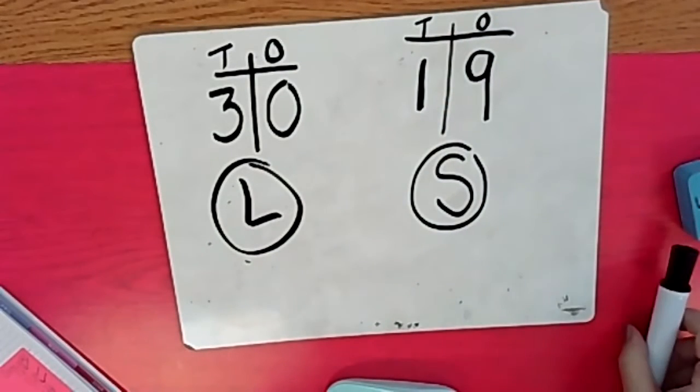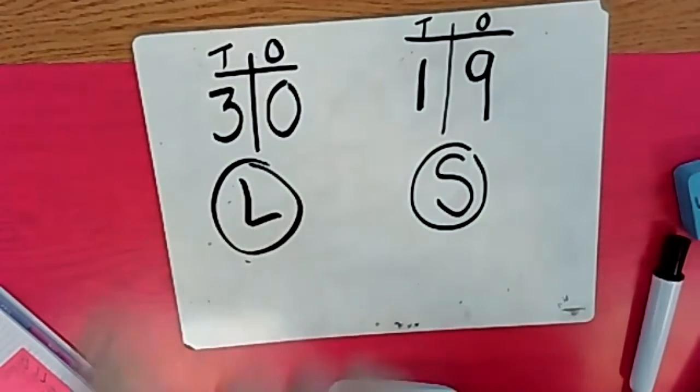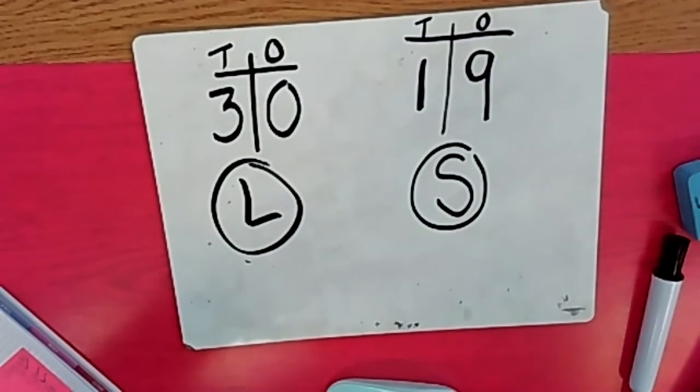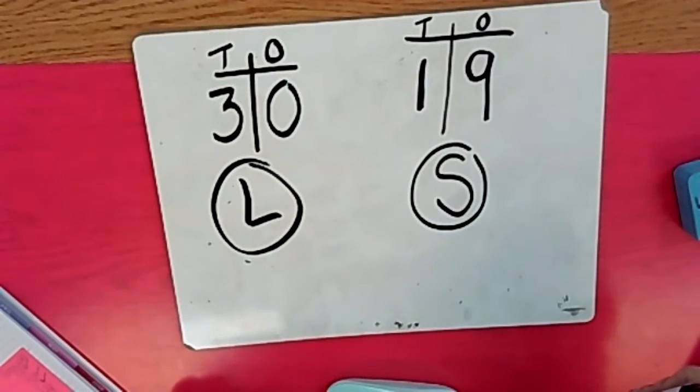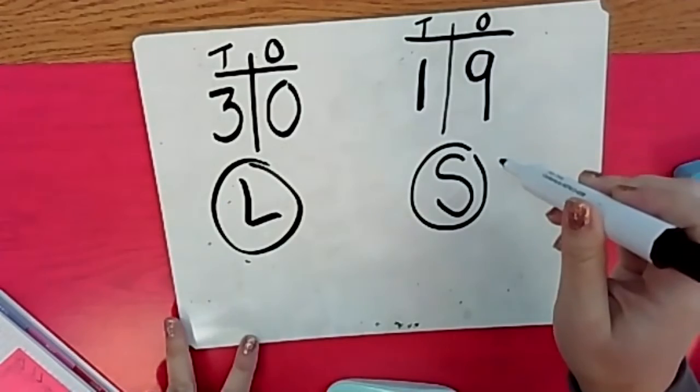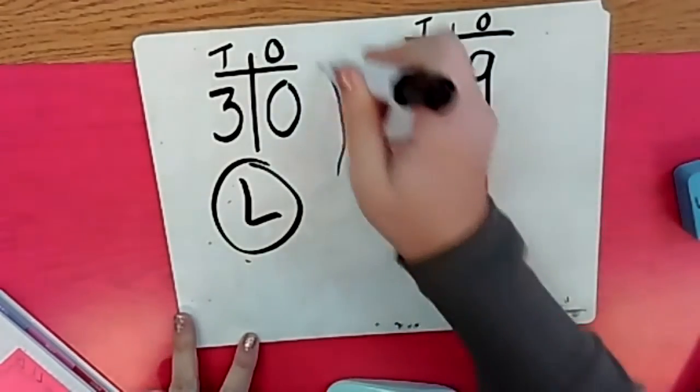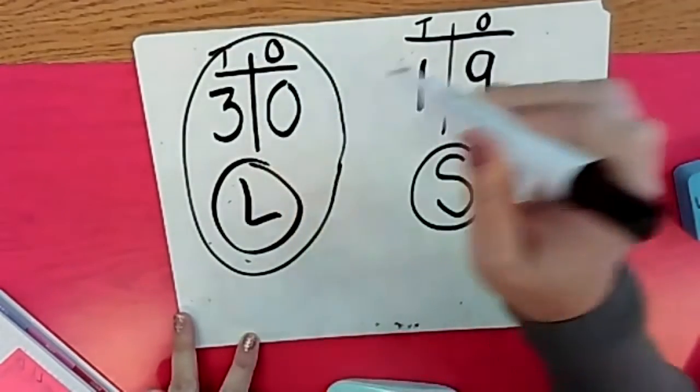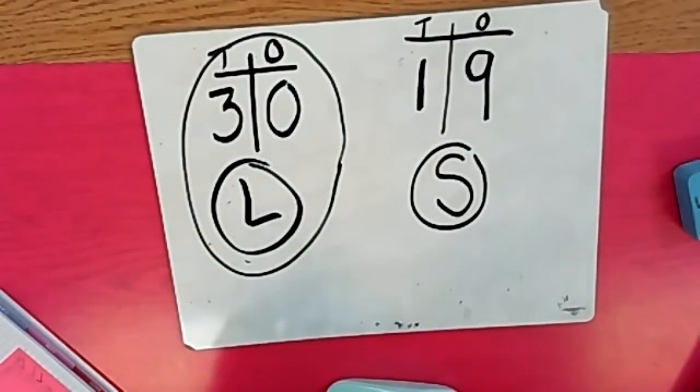Here's my question. Sally thinks that she has more than Lisa. Is that true? Circle who has the most crayons right now. And let's see if we both agree on the same answer. I think that Lisa has way more because 30 is bigger than 19. Did you do the same thing? You did, great.